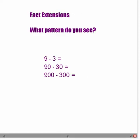We are now going to talk about fact extensions. Take a look at these 3 number models and look for patterns. What pattern do you see? Alright, let's get started. If I solve it, 9 minus 3 would give me an answer of 6.